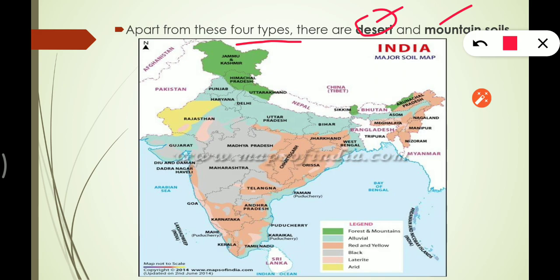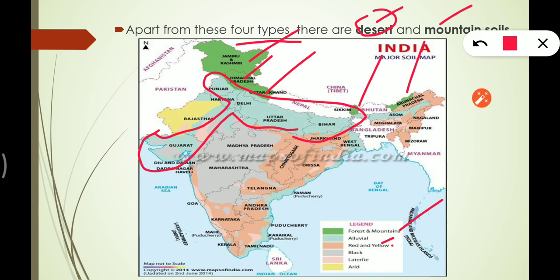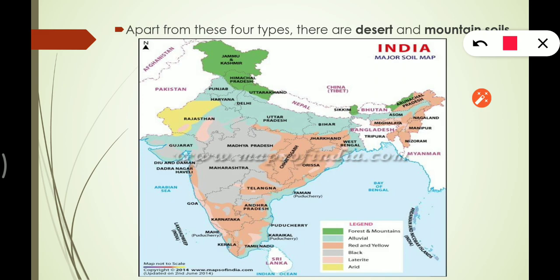On the map, mountain or forest soil is found in Jammu & Kashmir, Himachal Pradesh, Uttarakhand, Sikkim, and Arunachal Pradesh. Alluvial soil covers a major part of India — it is the largest soil type — found in Punjab, Haryana, Delhi, Uttar Pradesh, Bihar, West Bengal, the coastal plains, and parts of Gujarat and Rajasthan.